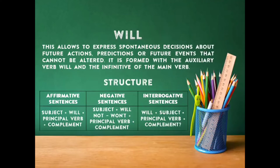Will. This allows us to express spontaneous decisions about future actions, predictions, or future events that cannot be altered. It is formed with the auxiliary verb will and the infinitive of the main verb. Structure — affirmative sentences: subject, will, principal verb, complement. Negative sentences: subject, will not or won't, principal verb, complement. Interrogative sentences: will, subject, principal verb, complement, question mark.